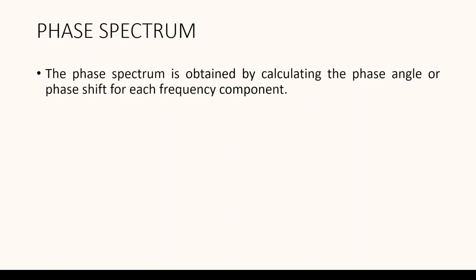The next is the phase spectrum. The phase spectrum is obtained by calculating the phase angle or the phase shift for each frequency component. The phase spectrum represents the spatial phase relationship between the frequency components, which affects the image's spatial structure. By analyzing the magnitude and phase spectrum, it is possible to understand the frequency content and spatial characteristics of the image. The magnitude spectrum highlights the presence of different frequency components while the phase spectrum provides information about the spatial arrangement or phase relationship between these components. The Fourier transform allows us to decompose the image into a sum of complex sinusoidal functions with varying frequencies and magnitudes.